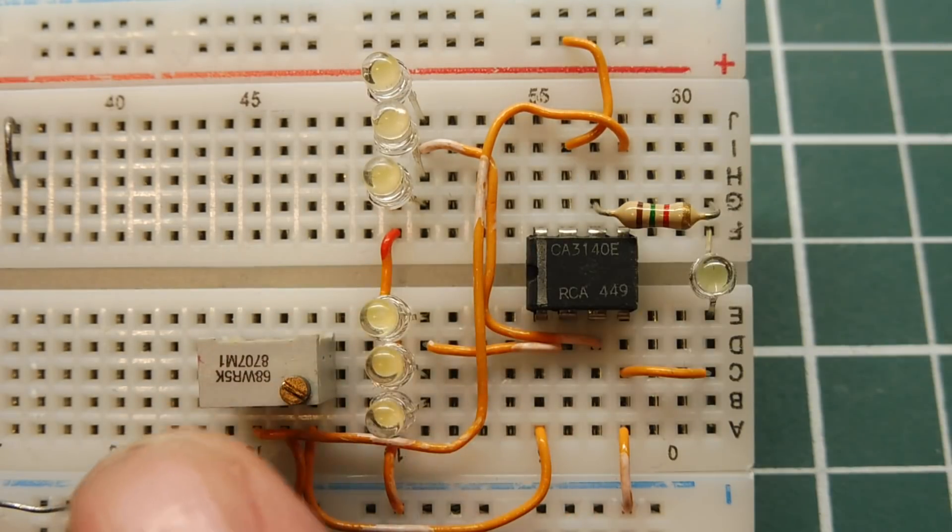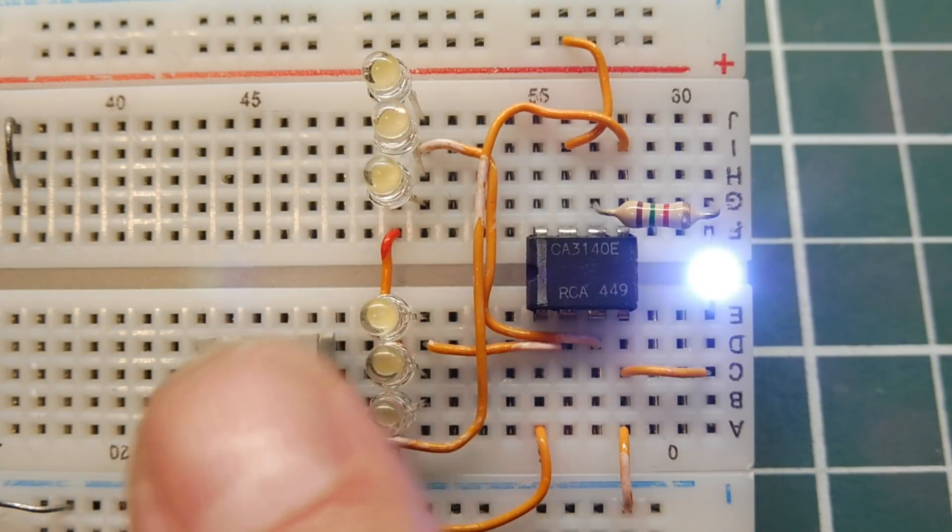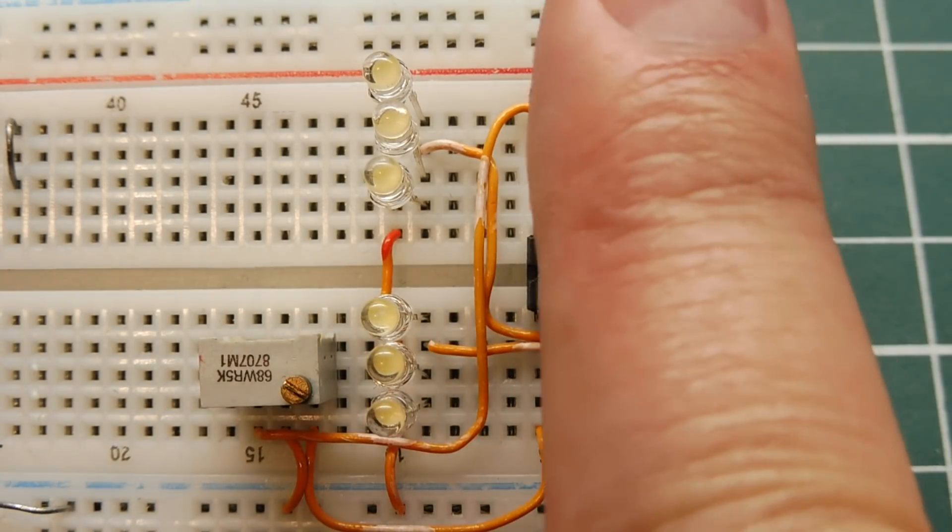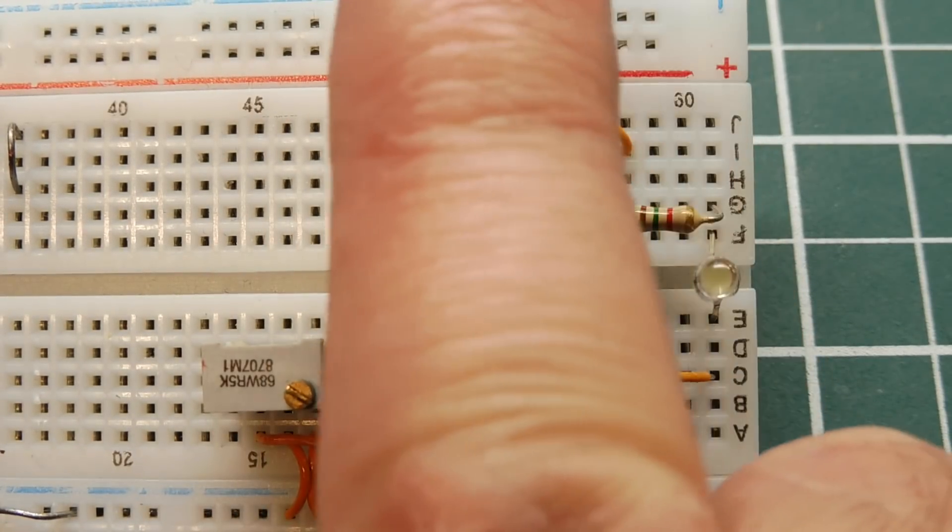Now if I change the light conditions of the room, the top three LEDs will compensate and the circuit will still work. So if I cover them both up, see it doesn't come on, because it doesn't see a change.